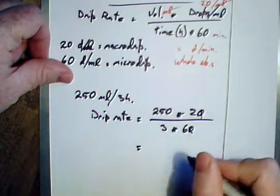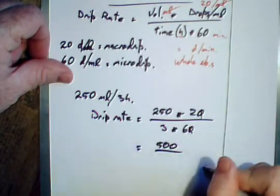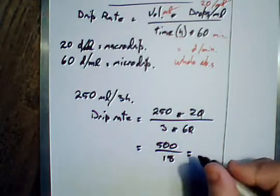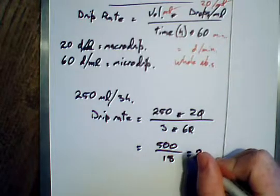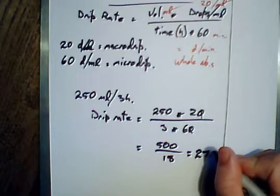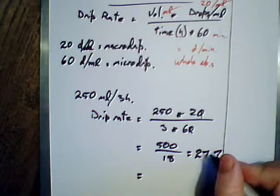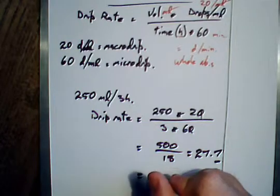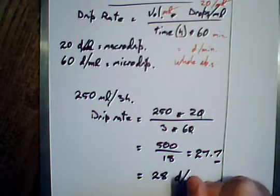So with that, that's pretty easy: 500 over 18 equals, with a bit of calculator, 27.7 recurring. That means for the whole number that's closer to 28 than it is to 27, so that is now 28 drips per minute.